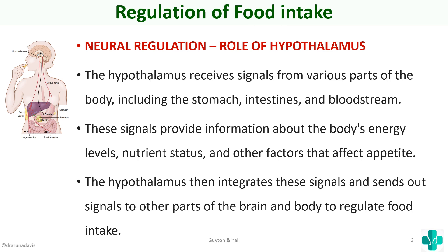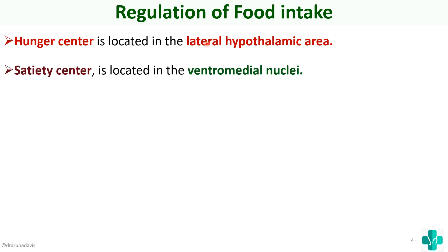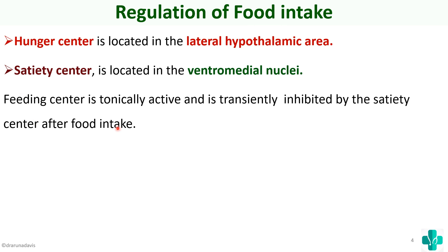In the hypothalamus, we have a hunger center located mainly in the lateral hypothalamic area, and a satiety center located in the ventromedial nuclei. The feeding (hunger) center is always tonically active and is only transiently inhibited by the satiety center after food intake. When we eat, the satiety center is activated and temporarily inhibits the feeding center, but otherwise the feeding center is always active.